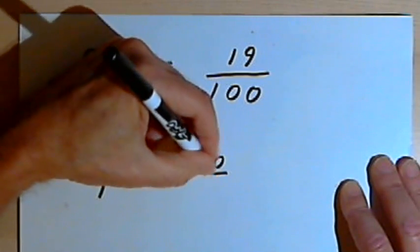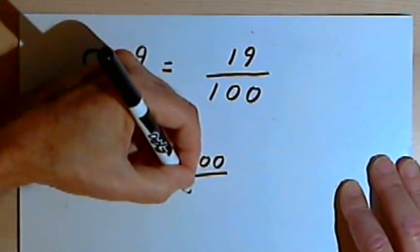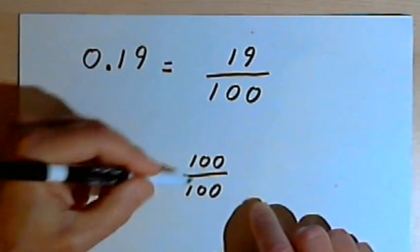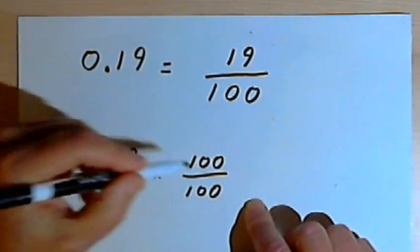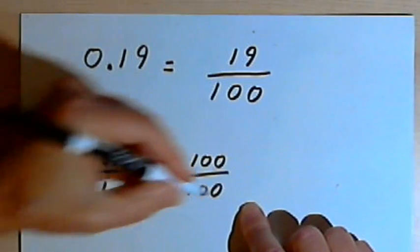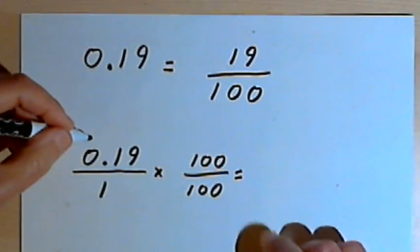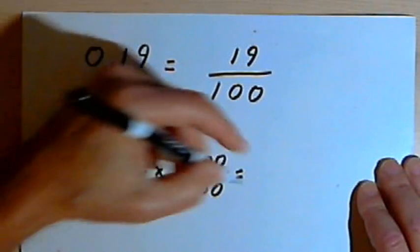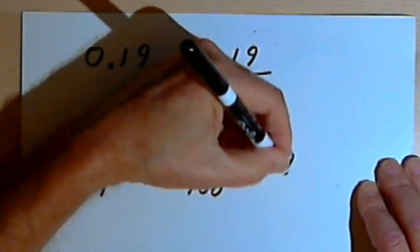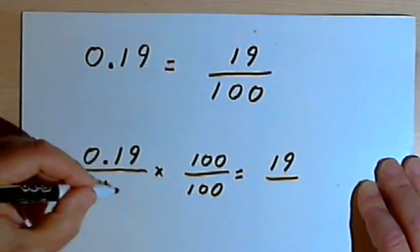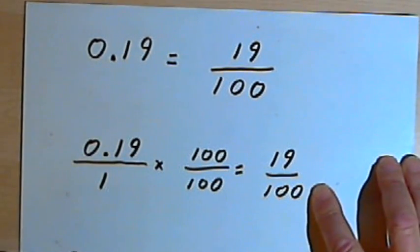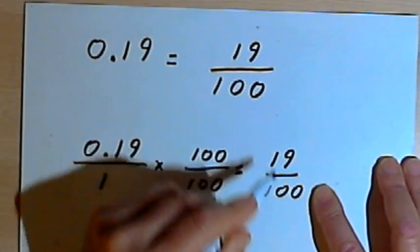But if I multiply the numerator by 100, I've got to multiply the denominator by 100. Now that's fine, because 100 over 100 is just equal to 1. So if I do the multiplication, 0.19 times 100 is just 19, and 1 times 100 is 100. And I end up with the same answer, 19 over 100.